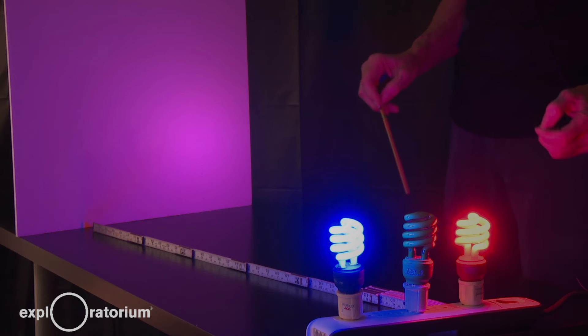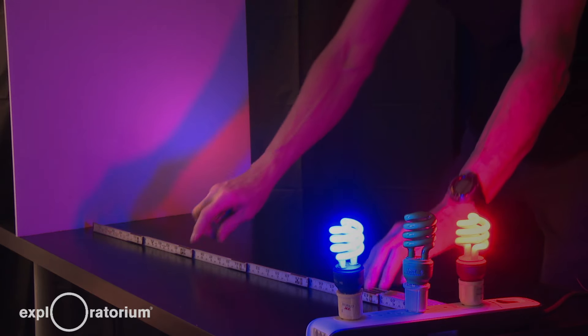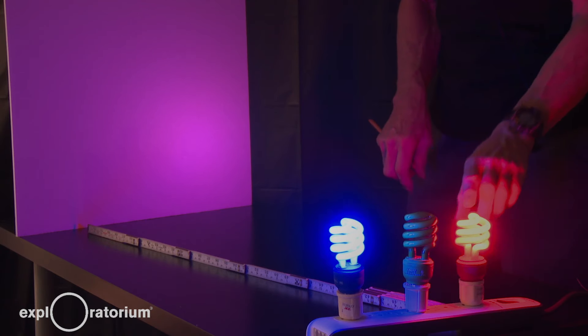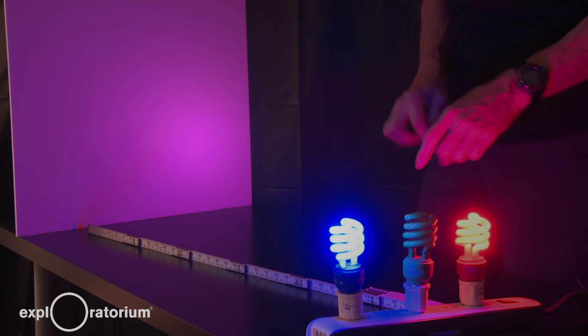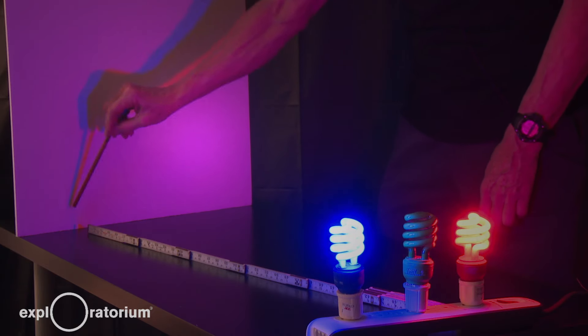The important concept to understand the colored shadows is that light travels in straight lines. I'm going to show that using this ruler. I'm going to put one end of the ruler at the center of the red bulb. It shows the light traveling along one path to the screen.